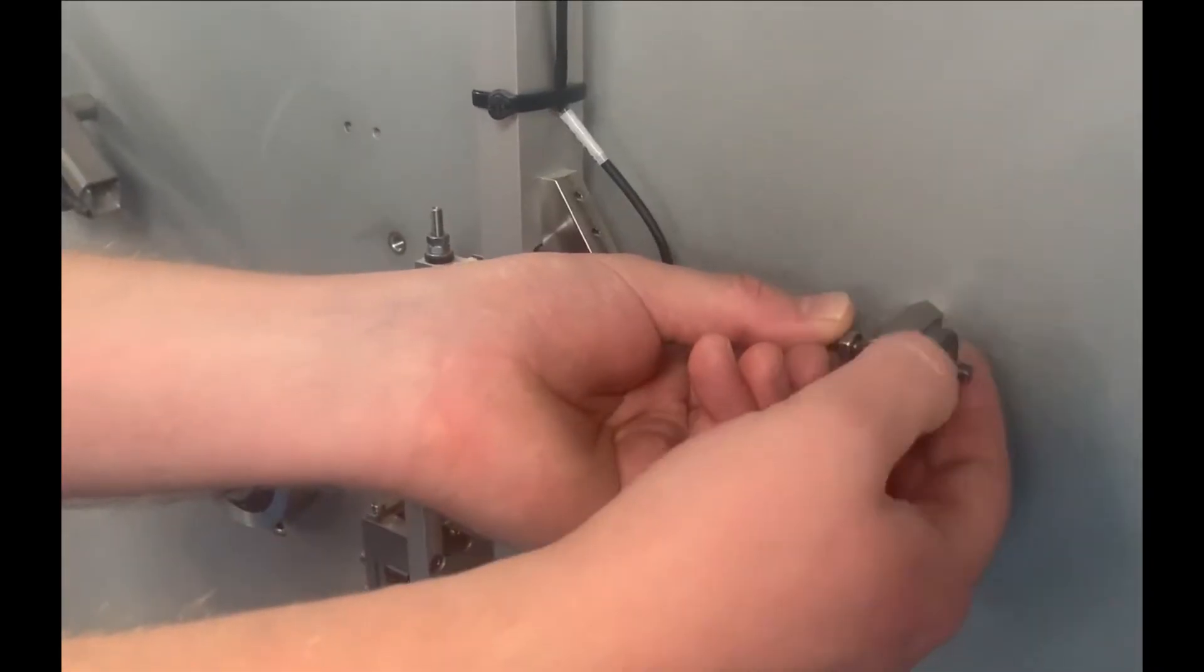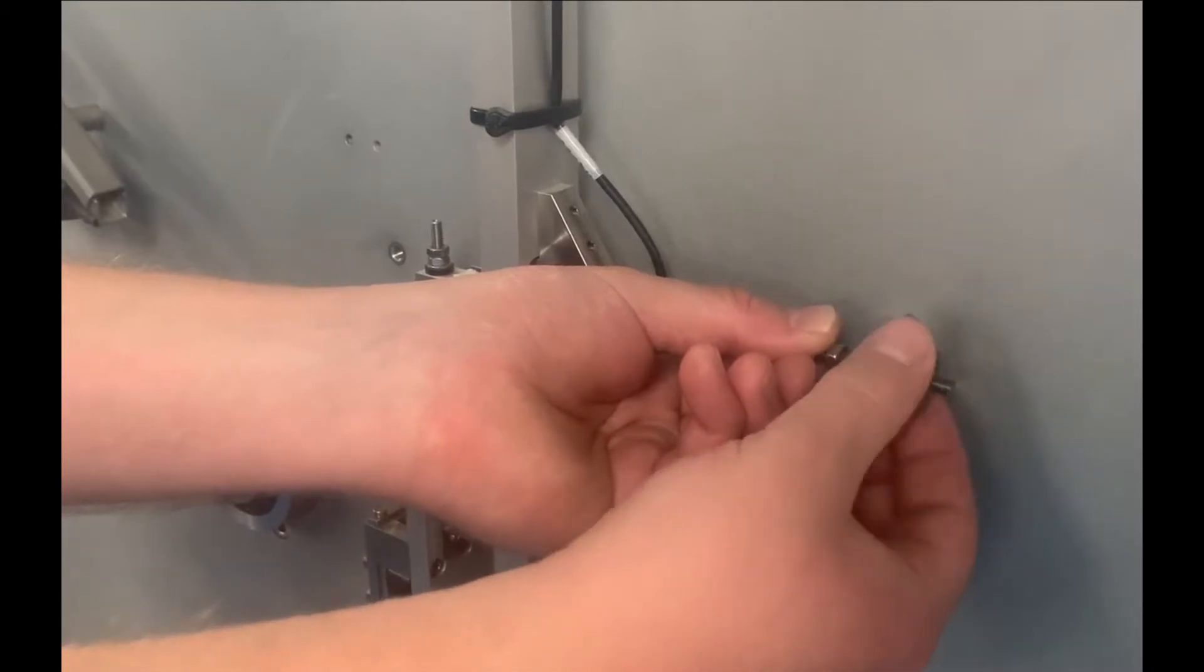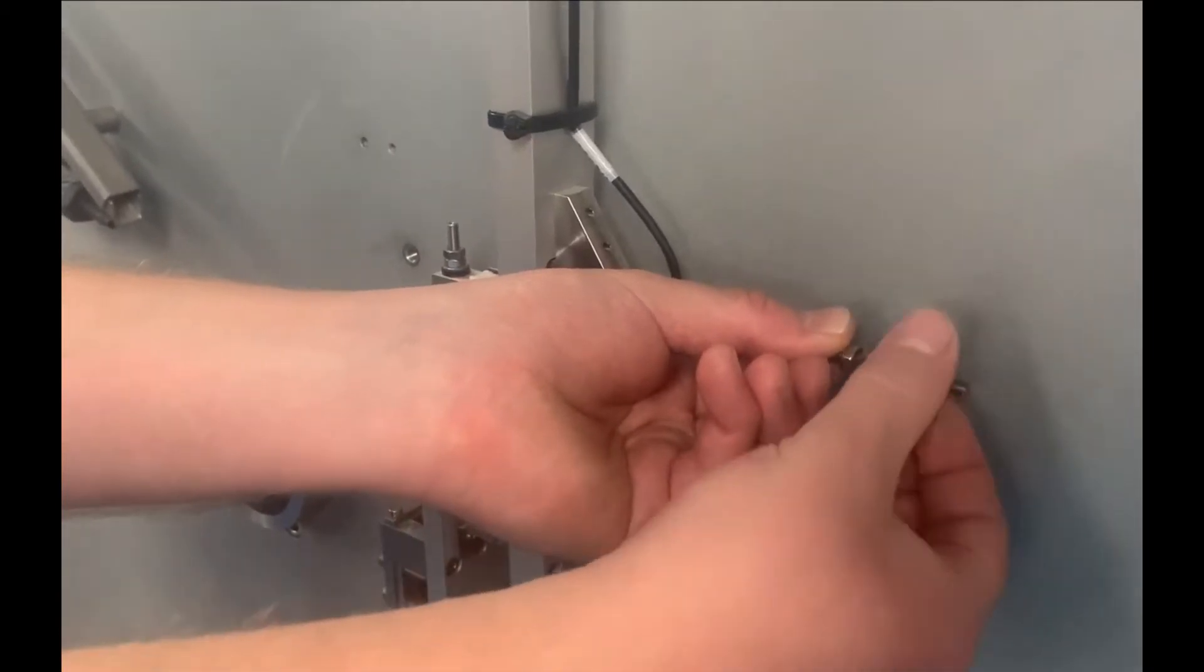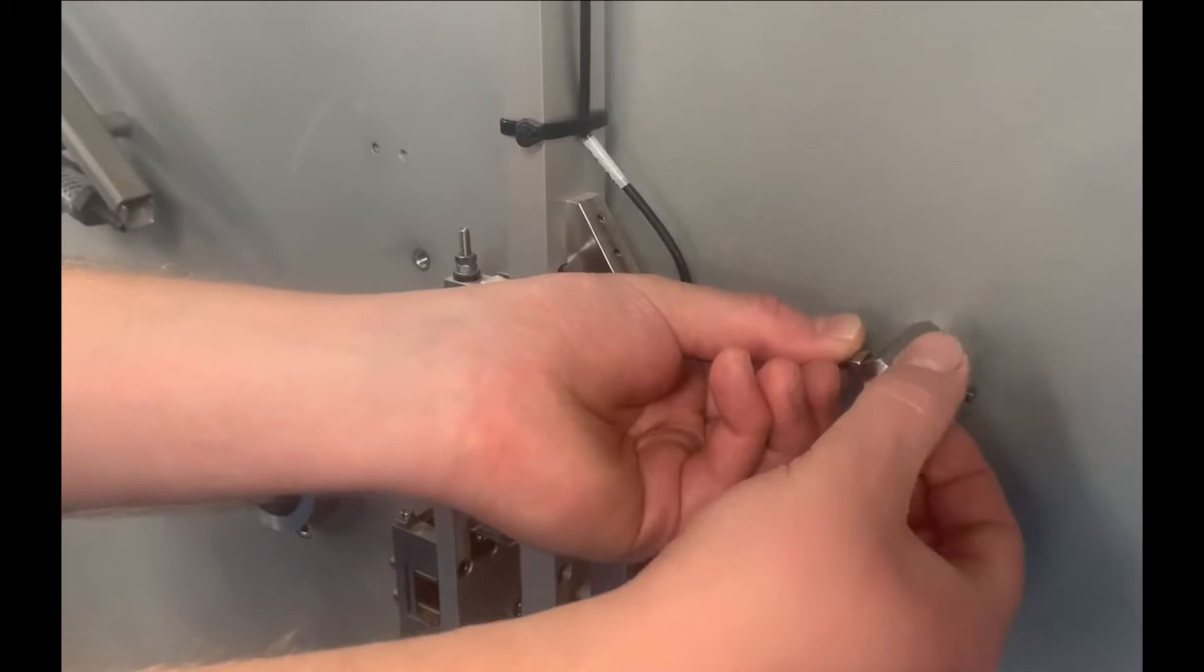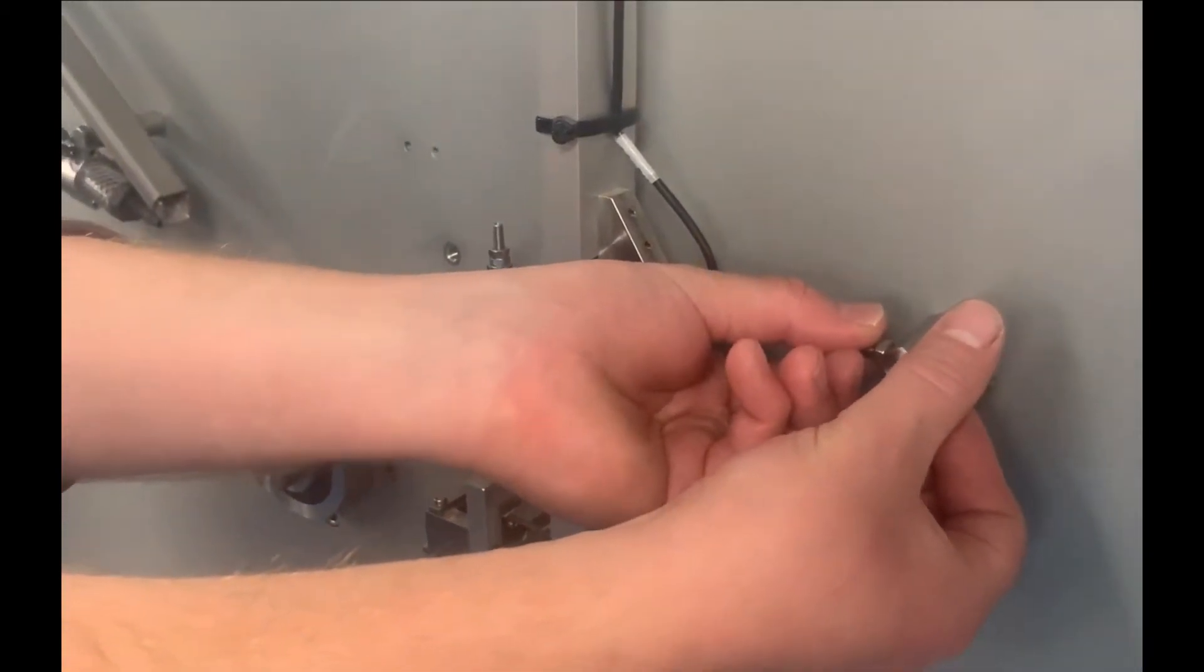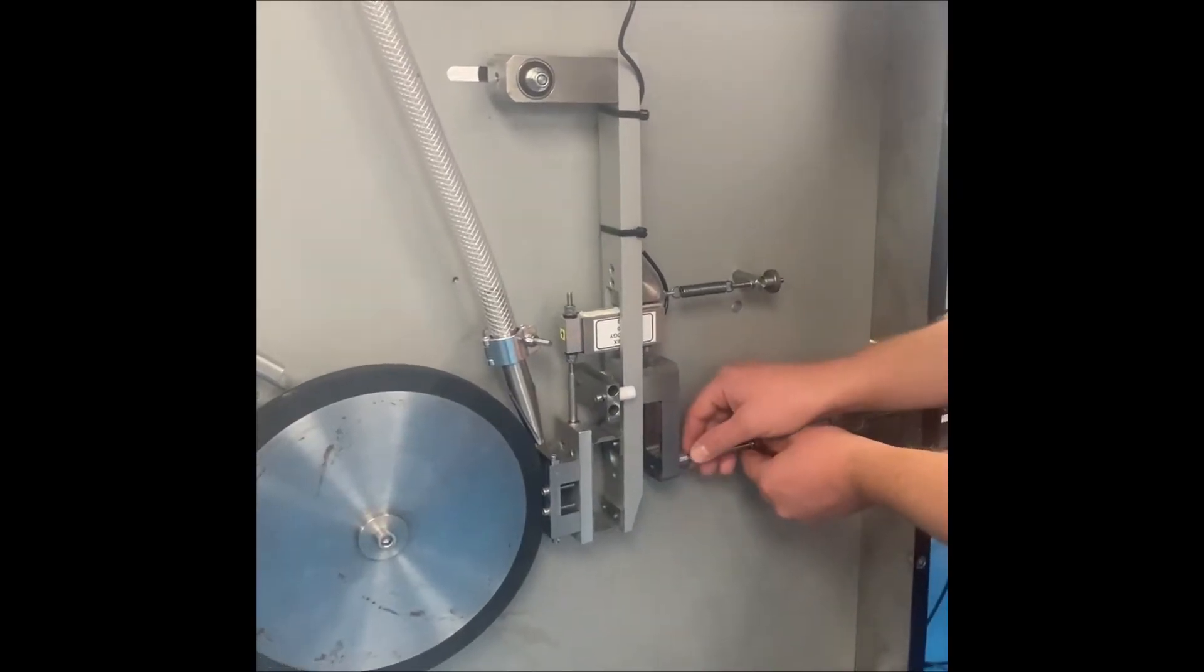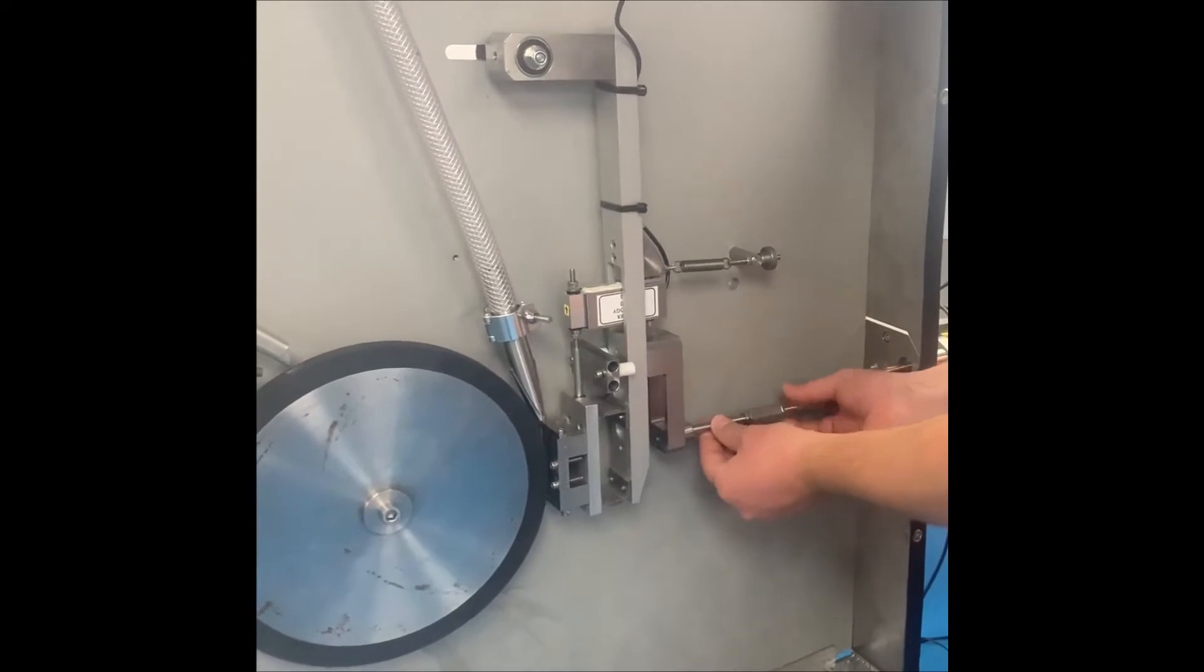Connect and adjust the counterbalance spring so that the load arm hangs vertically with no load on the test wheel. Note that it may be necessary to adjust the position of the load arm pivot in the slot to ensure that the load arm is vertical when the specimen is in contact with the wheel.